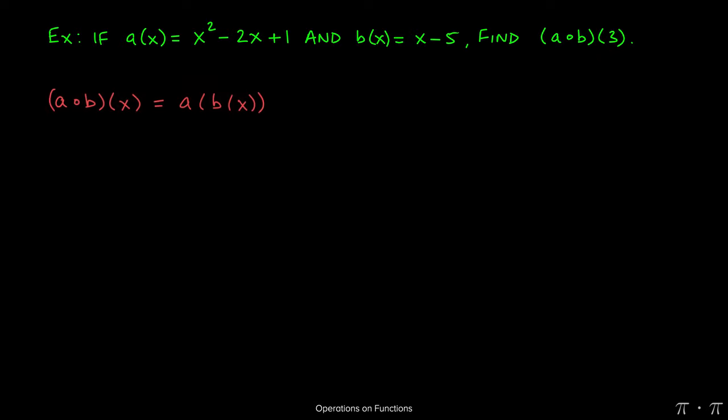Now a composed of b of x is the same as a(b(x)). What this means is that whatever my function b(x) is, that has to get plugged into a(x). So wherever I see an x here and here, I'm going to replace it with x - 5.